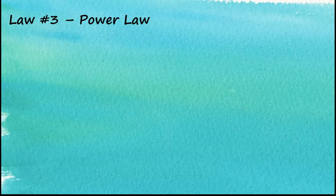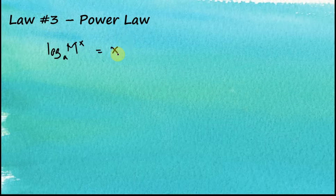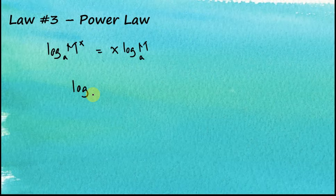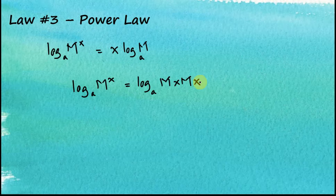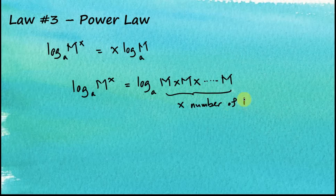Now for law number three, the power law: log base a of m^x = x log base a of m. We start with log base a of m^x, which equals the log of m multiplied by itself x times.